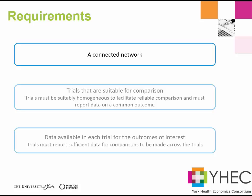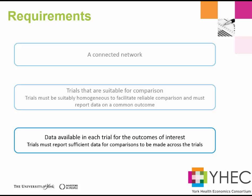First, you must have a connected network — there must be a path from each intervention of interest to every other intervention of interest in the network. Second, the trials in your network should be qualitatively assessed to ensure they are similar enough to combine. Third, you need to have sufficient data available in each trial for the outcomes of interest. We will address each of these points in more detail in the following slides.